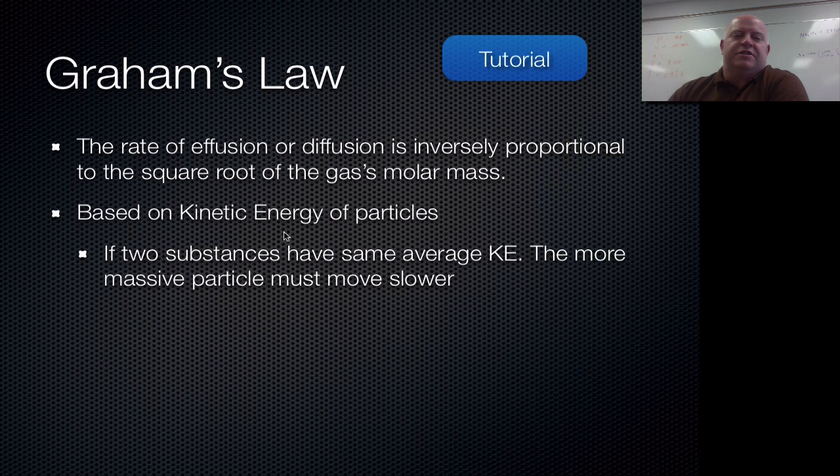So that brings us to Graham's Law. Graham's Law tells us that the rate of effusion or diffusion is inversely proportional to the square root of the gas's molar mass. So if we go back to this kinetic energy idea, kinetic energy is one-half mass times velocity squared. So in that equation for kinetic energy, we have mass, but we have velocity squared. So when you start to compare rates of movement or rates of effusion or diffusion, you need to do a square root of those things to end up canceling out that velocity that is squared.